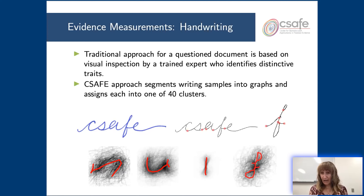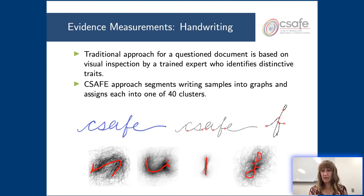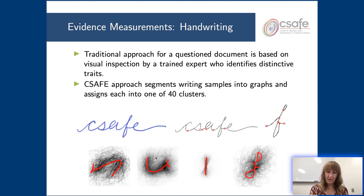Once we have these graphs that represent the segments of writing, similar to what a document examiner would do, we look for other segments of writing that look similar and group those together. We take all of these graphs seen in a set of documents and cluster them into segments or graphs that look similar. For example, we might put things that look like F's or G's — something with two loops — in one cluster. Another cluster groups things that are sticks straight up and down, like I's and L's.